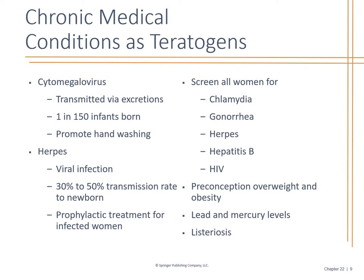Cytomegalovirus is transmitted via excretions. With herpes, if they have an outbreak of genital herpes, we're not going to want them to have a vaginal delivery — discuss that with them. We do prophylactically treat infected women. All women are screened for STDs with blood work and pelvic exam culture, and we look for lesions in the genital area. We also test for Group B Strep at about 28 weeks so that we can give antibiotics during a vaginal delivery to prevent transmission through the birth canal. Lead and mercury levels matter too — high intake of fish containing mercury can be teratogenic.